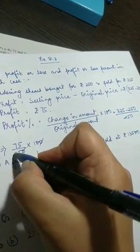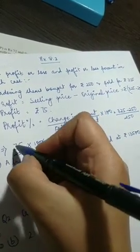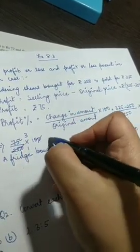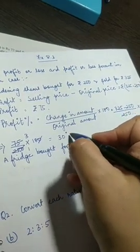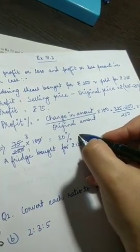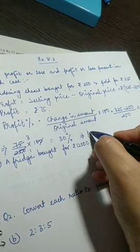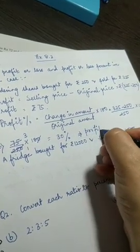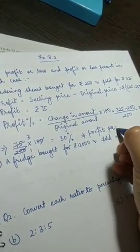75 upon 250 into 100. Now cancel out, 25 one, 25 three, so this is 30 percent which is the profit percent.